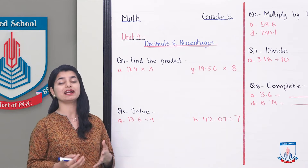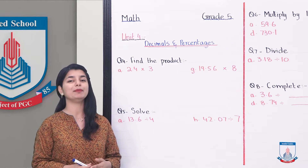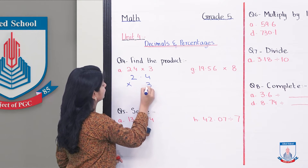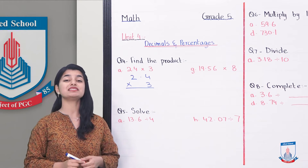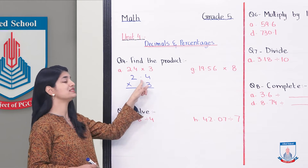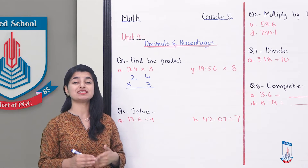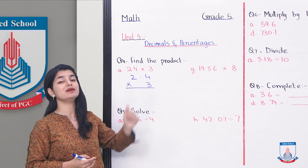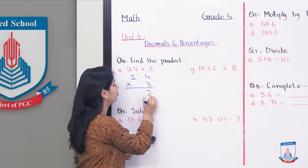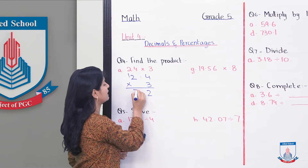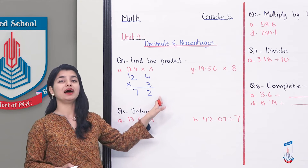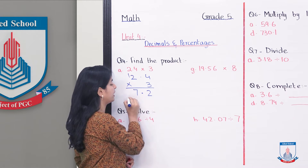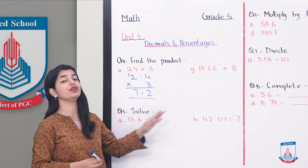Now, we have many parts here. We will attempt them. So, 2.4 into 3 — first, we will write it in the form of multiplication. The important thing to note is: plus 1, 7. Your answer is normally 72. But because we have given one decimal place here — the decimal place was after one digit — one digit you will move and place the decimal. So, what is your answer? It will become 7.2.